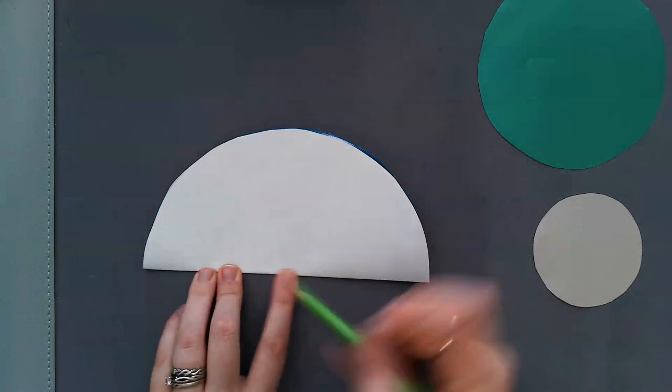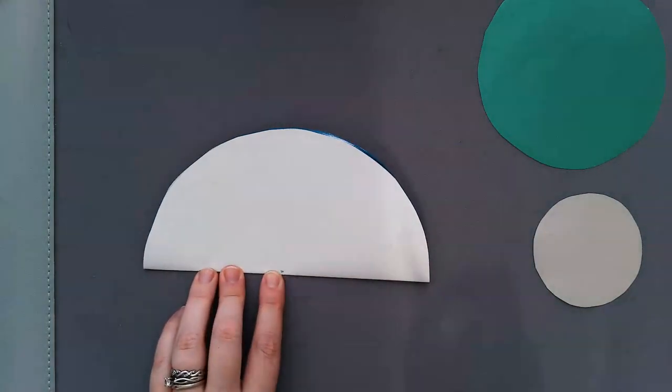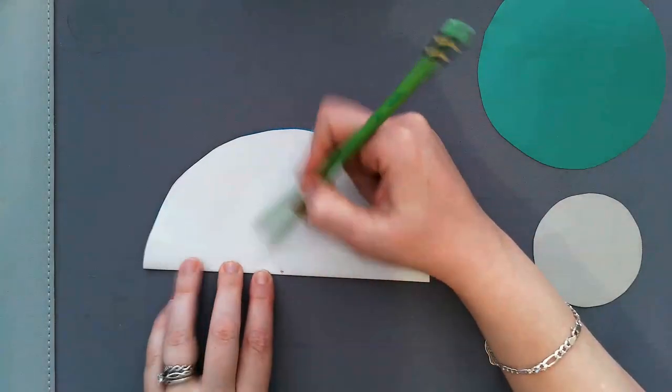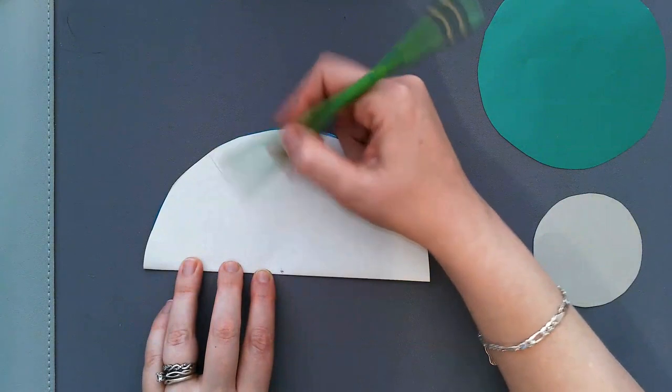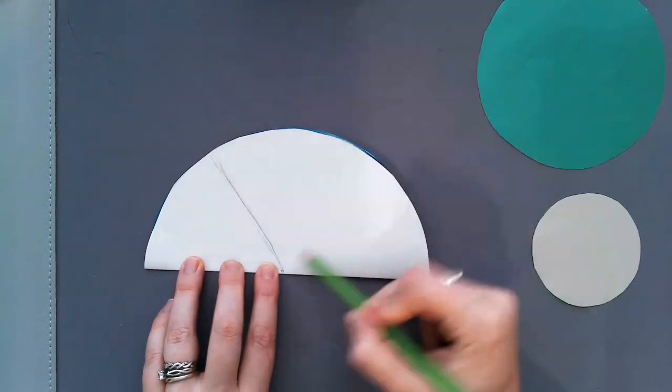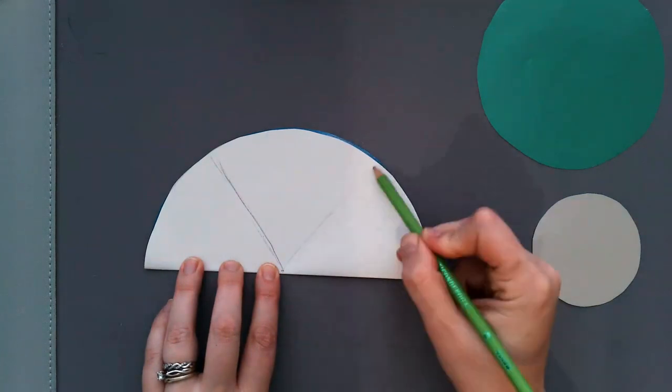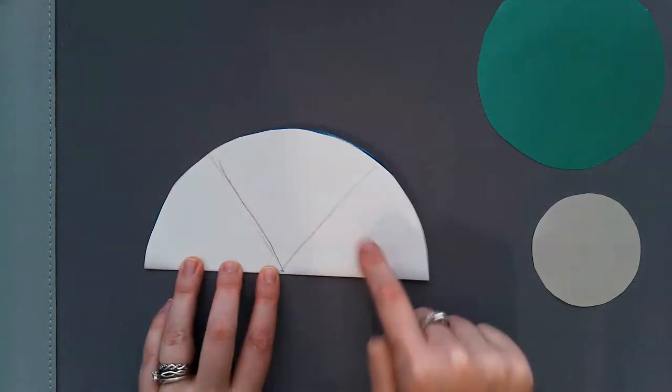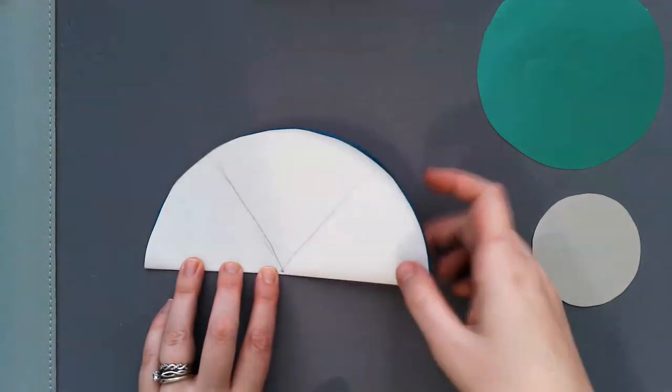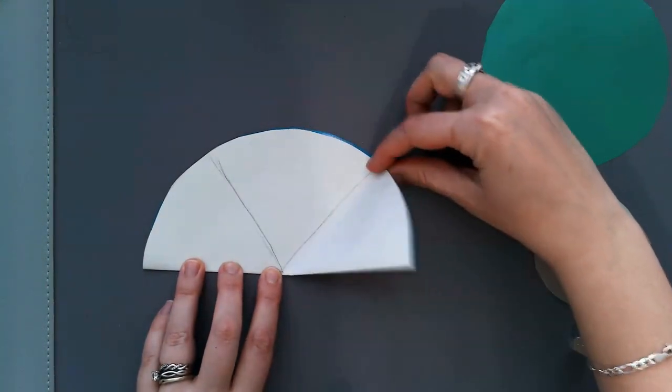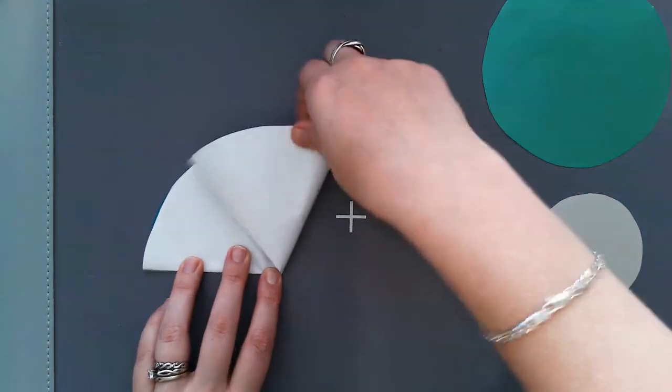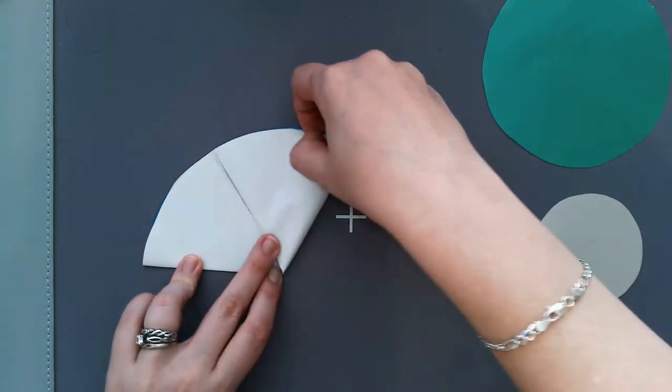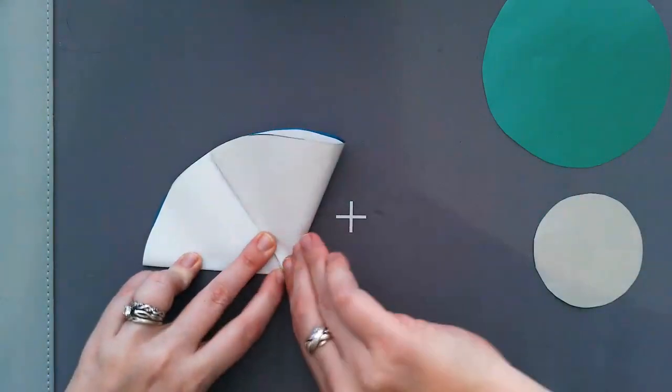In order to do that, sometimes it's easier if we can see before we fold, so I'm just going to roughly draw two lines that break this half of a pie into three pie pieces. I'm just eyeballing it, it's just close. Then I'm going to take one side of the pie and fold it up toward the middle, so I'm going to fold it on the line that I just drew so that the rounded edges match.